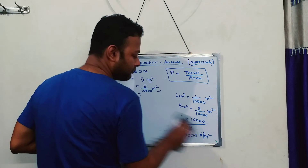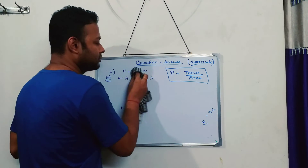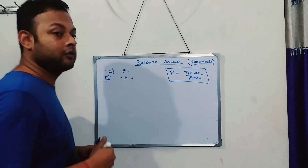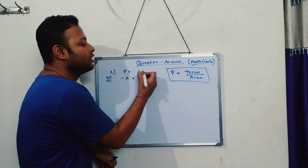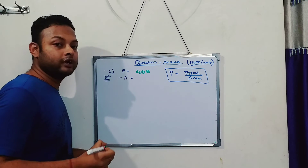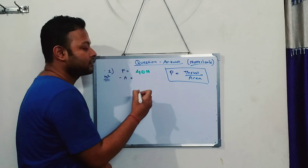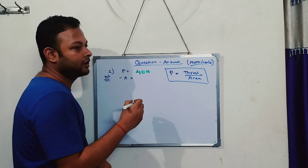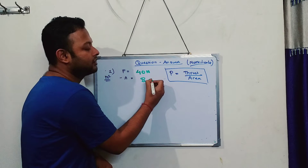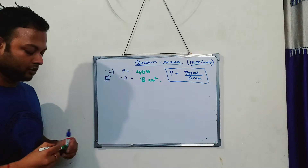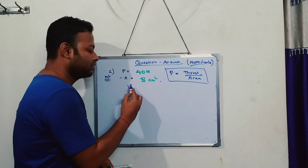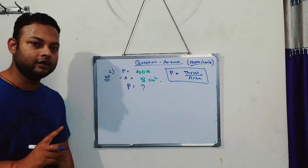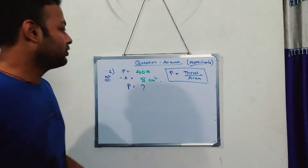Homework Question 1: Force = 40 N, Area = 8 cm². How much is the pressure? I want you to do this sum and write the answer in the comment section.